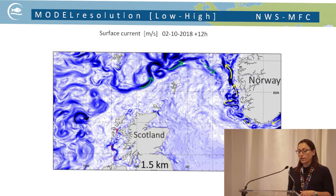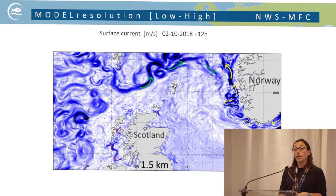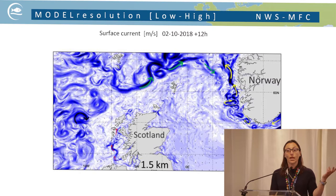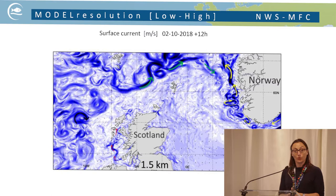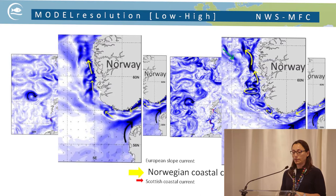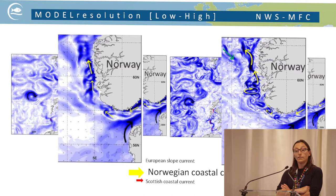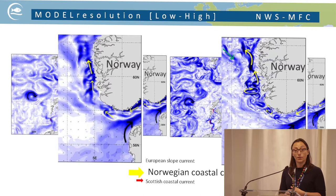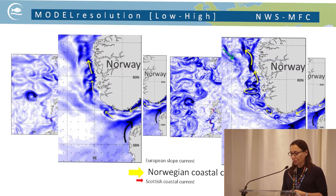Here is an example of surface current from the Northwest European shelf system at low resolution — seven kilometers. Comparing this with the same plot at 1.5 km resolution, there are much more structures at the mesoscale level because the model at 1.5 km is eddy-resolving, whereas at 7 km it is not. Zooming into the Norwegian coastal current, at 1.5 km we can resolve the meanders and eddies driving the current; at 7 km all these features are missing.